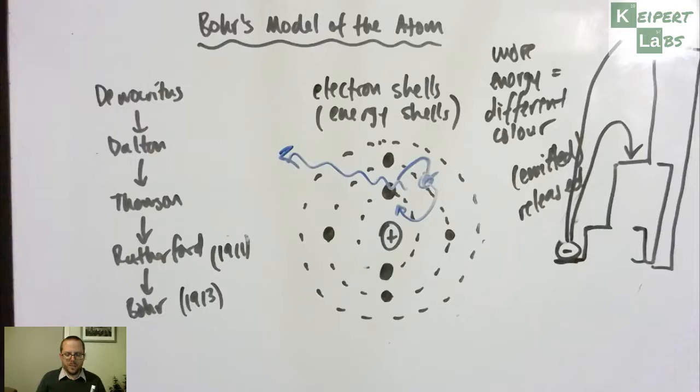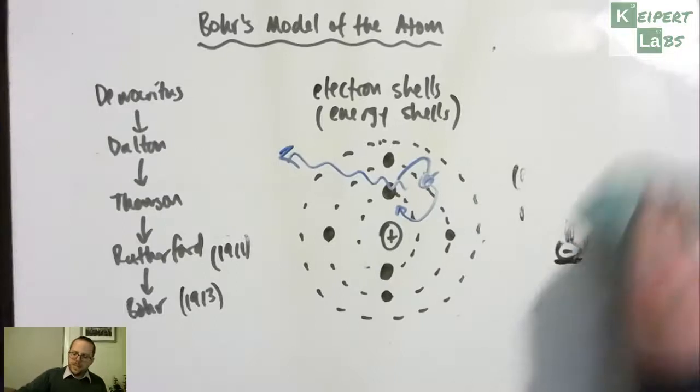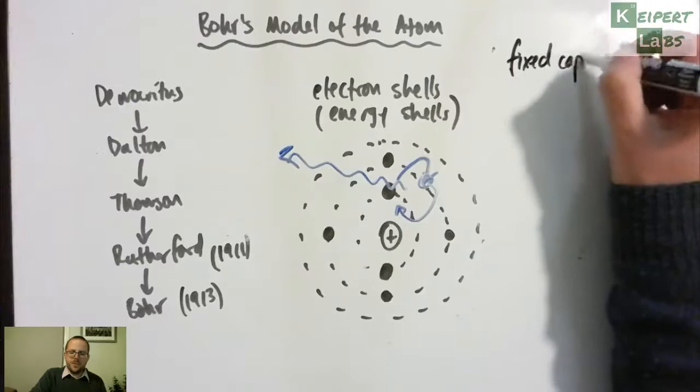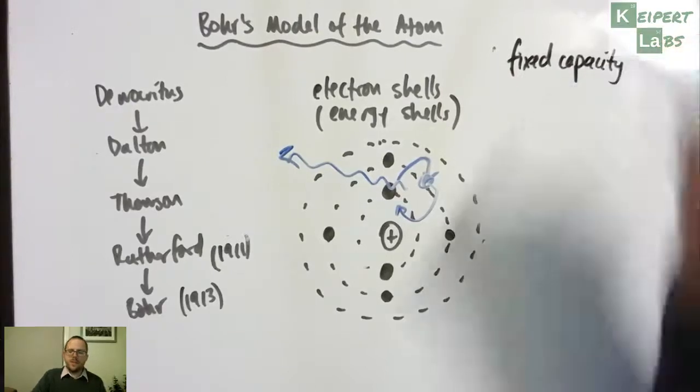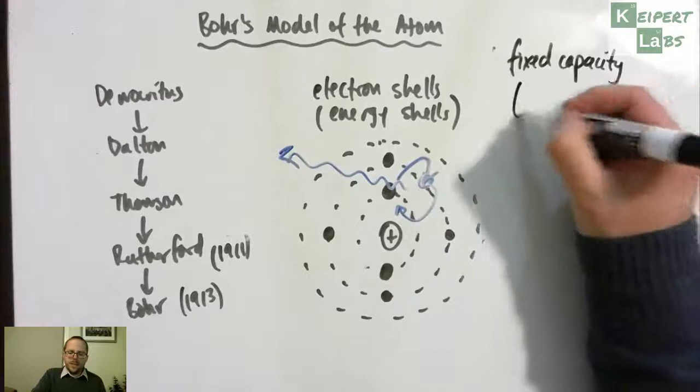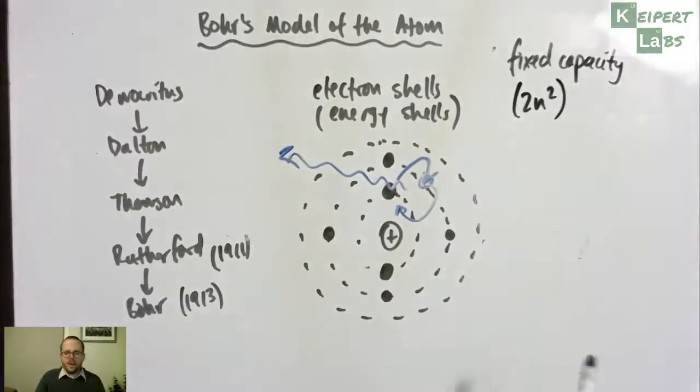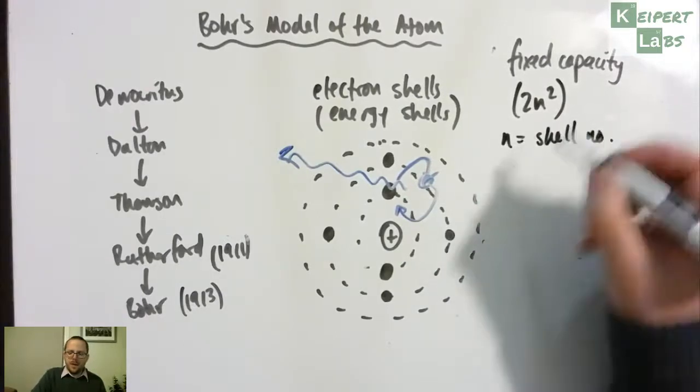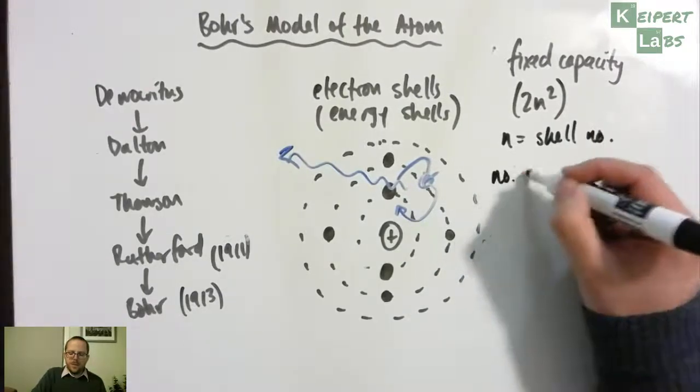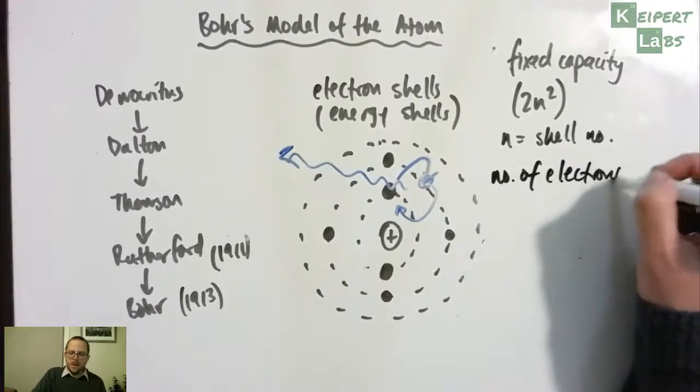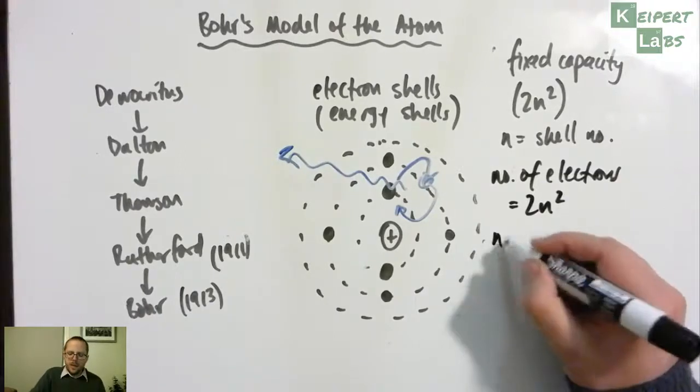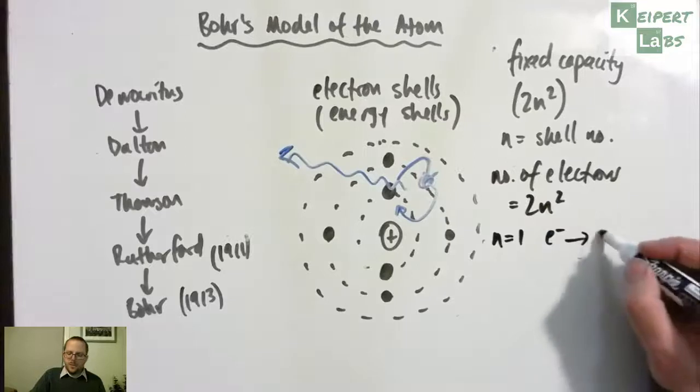Now, one last bit of information, this idea of what's called the fixed capacity. That is, that the electron shells don't have an infinite space. It's given by a rule called 2n squared. So if n equals the number of the shell, that the number of electrons is given by 2 times the number of the shell squared. So if n equals 1, the electrons equals 2.